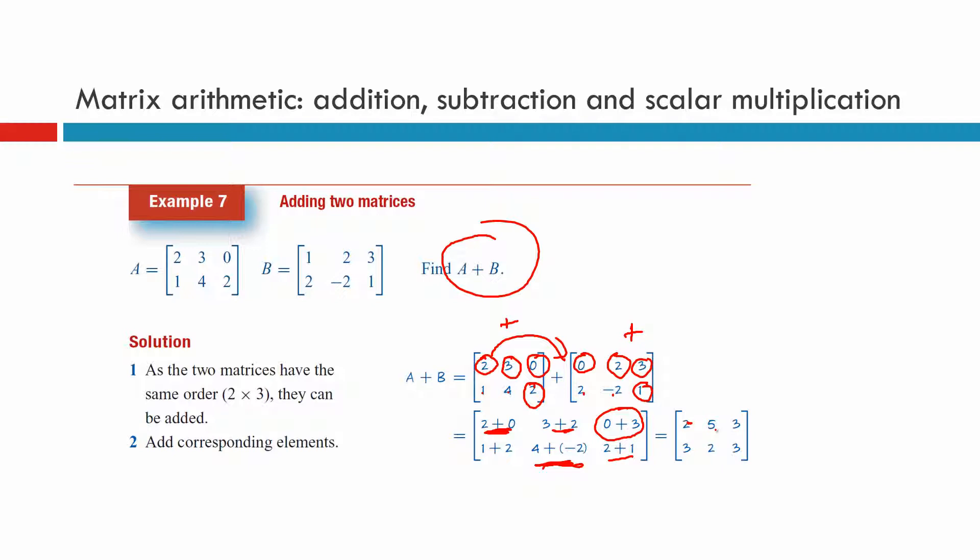So two plus zero is two. Three plus two is five. Zero plus three is three. Second line, one plus two is three. Four plus negative two is the same as four minus two. So that's just two. And two plus one is three. That's adding matrices.